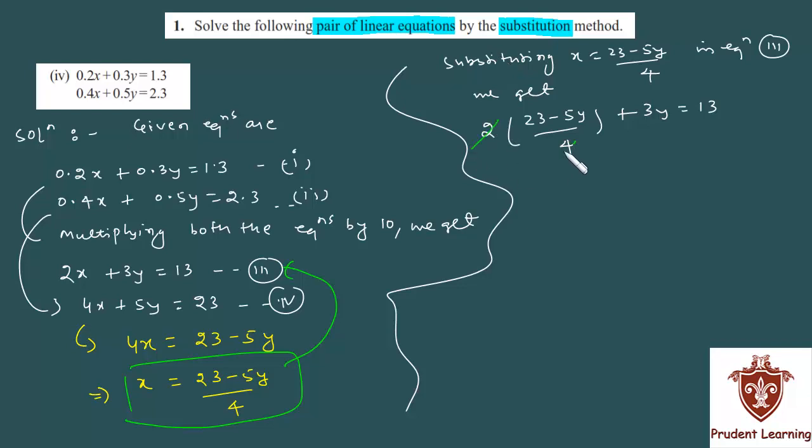Now, I will simplify this equation. The 2 in the numerator cancels. We get 23 minus 5y, and when we multiply by 2, plus 6y equals 26. This gives us 23 minus 5y plus 6y equals 26, which gives us y equals 26 minus 23, which equals 3.